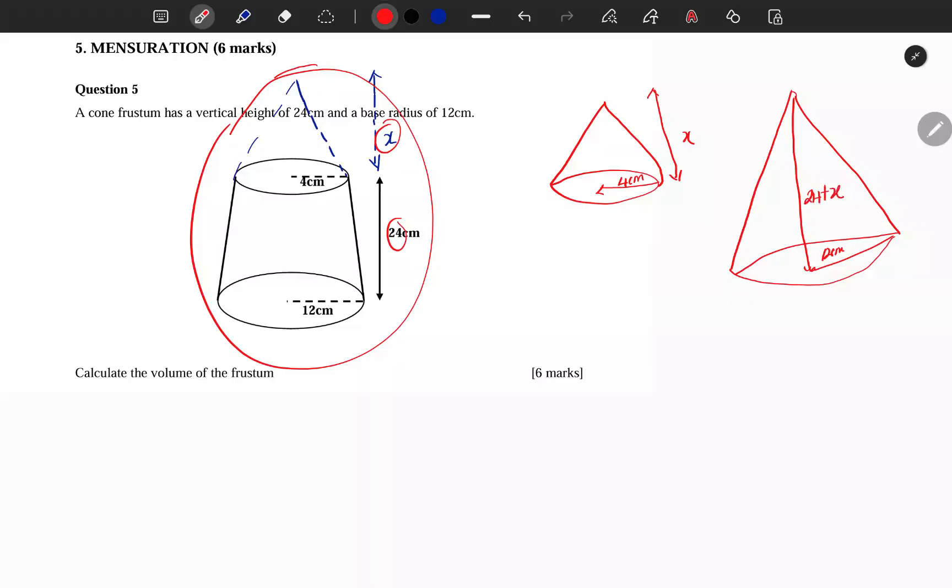Now how can I find the volume of the frustum? Look, in the original cone, if I remove the top part...